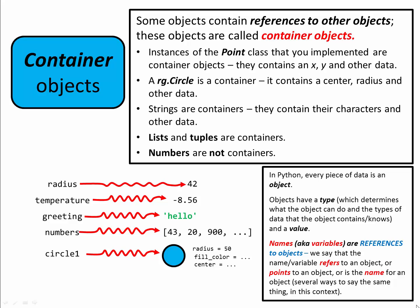We call such objects container objects. For example, the string hello contains references to its characters H-E-L-L-O. A list contains references to the items in the list. And a circle contains references to its radius, its center, its fill color, and other data. Those are all container objects.